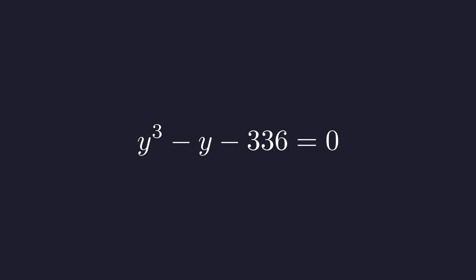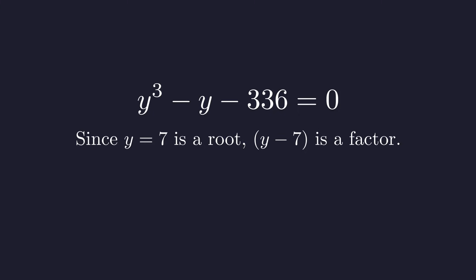Now a cubic polynomial can have up to three roots. We've found one of them, but we should check if there are any others. Let's go back to our simplified cubic equation in terms of y. Since we know that y equals 7 is a root, the factor theorem tells us that y minus 7 must be a factor of this polynomial.